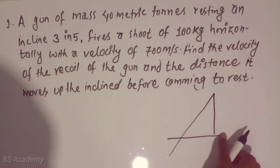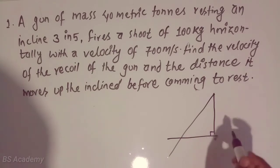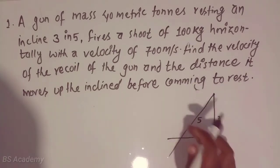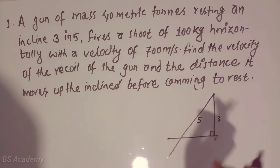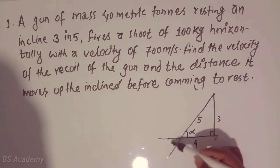Let me draw the diagram. At first, there is an inclined plane which is 3 in 5, meaning the ratio of the inclination with the vertical height is given. This is the inclined plane and this is the horizontal plane. Suppose the angle between them is alpha. From the Pythagorean theorem, this will be 4 units.